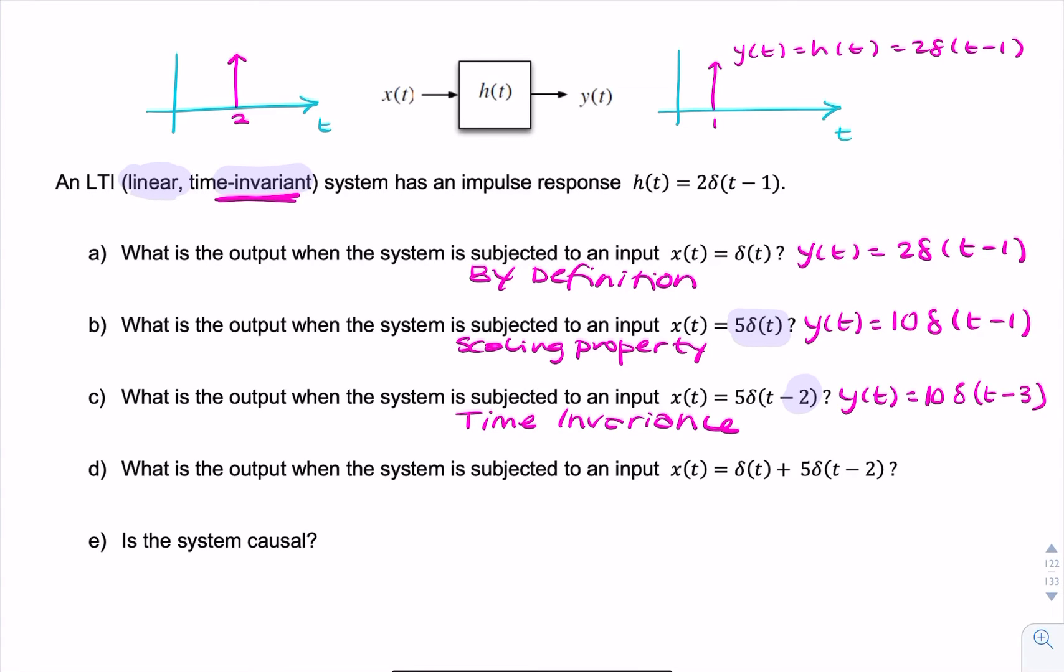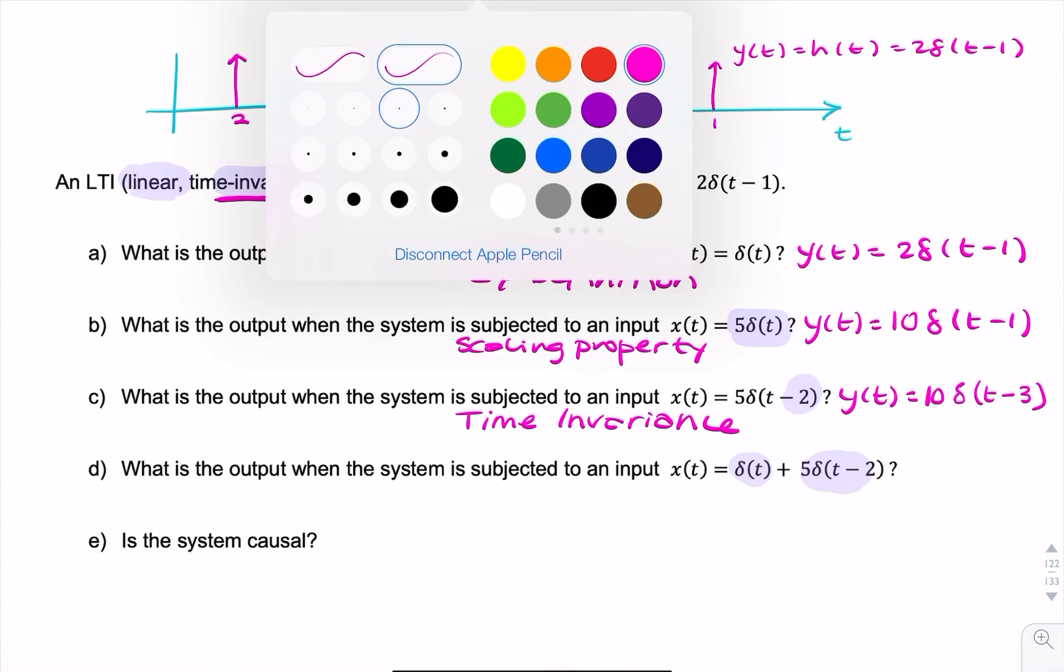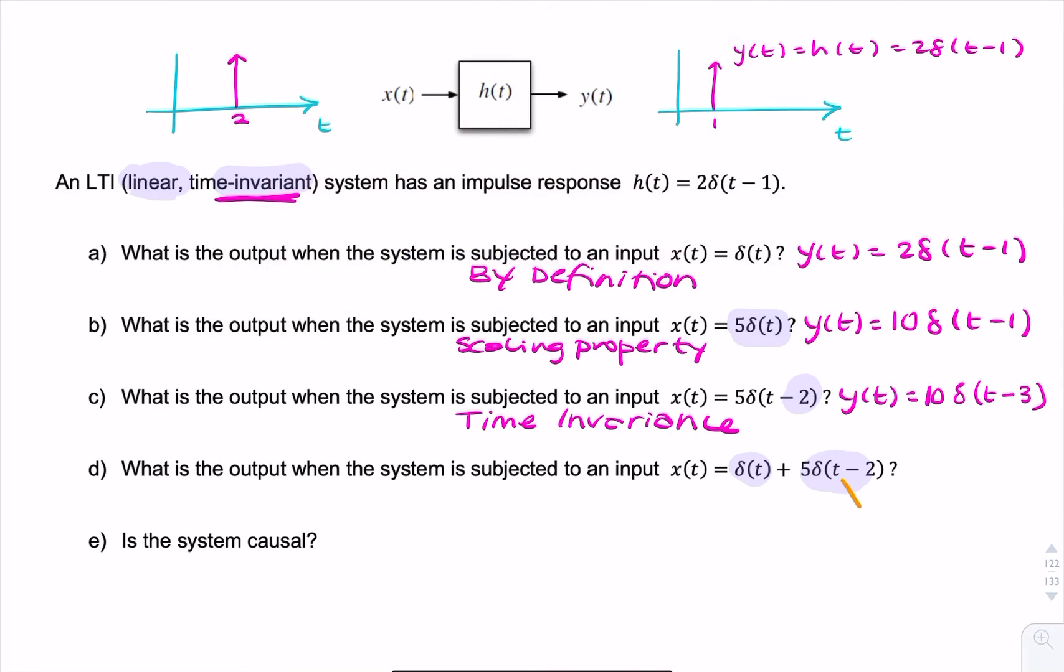For part D, we now have two impulses. One of them, or both of them, are quite familiar. So this one is that, and this is that. So we have the inputs from A and C all going into D. So how do we treat a system like that?